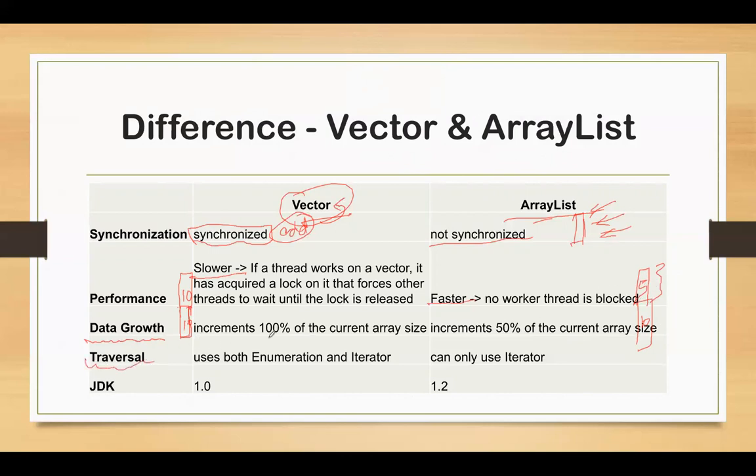Coming to traversal, a Vector uses both Enumeration and Iterator, whereas in case of ArrayList, we can use only an Iterator.